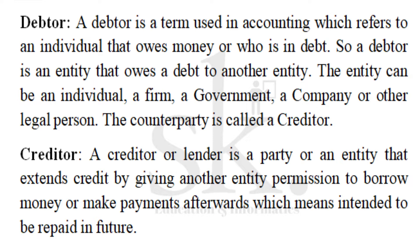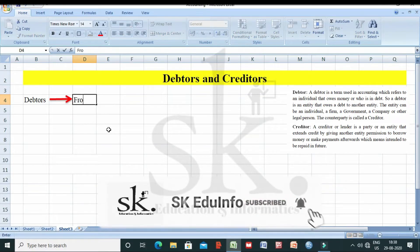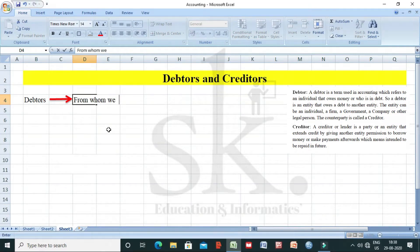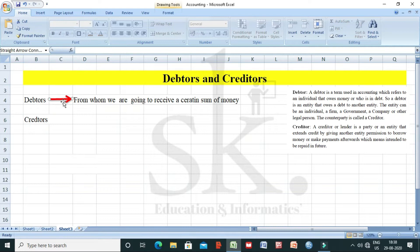Which means the amount is intended to be repaid in future. Let's take an example to explain this. Debtors are those persons from whom we are going to receive a certain sum of money. The creditors, on the other side, are those to whom we require to pay.